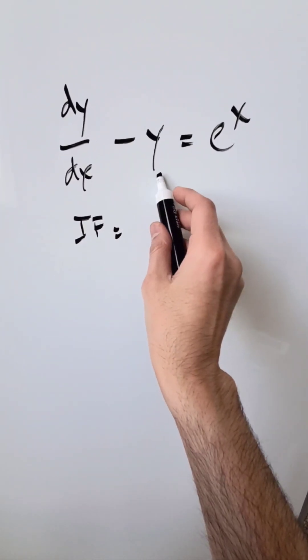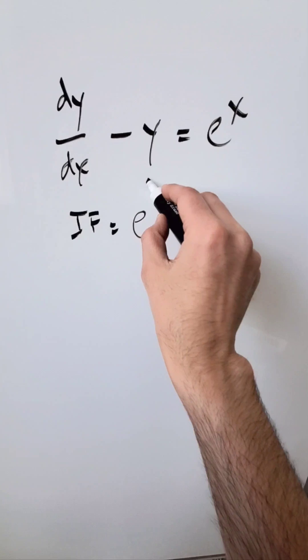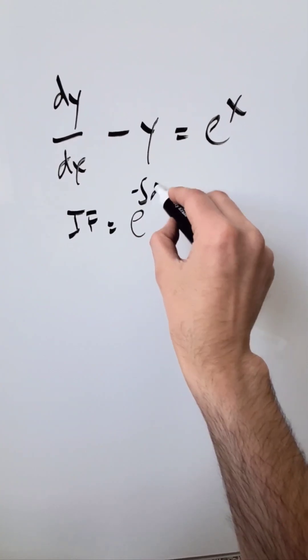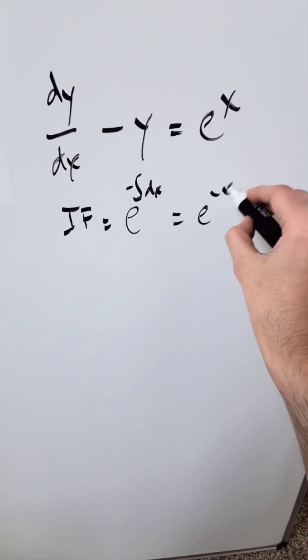What's the coefficient of y? It's a minus 1. You're doing e^(integral of -1 dx), and you know here it's e^(-x).